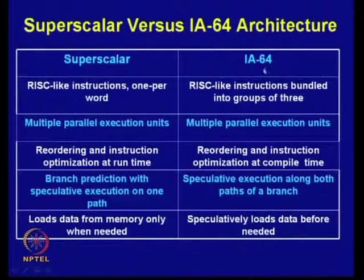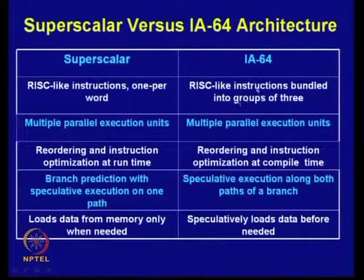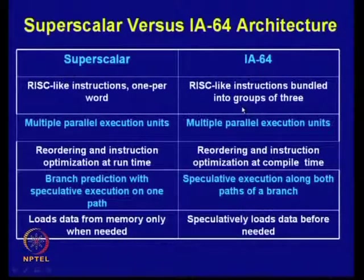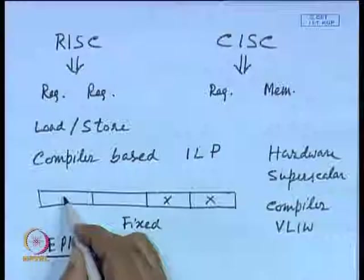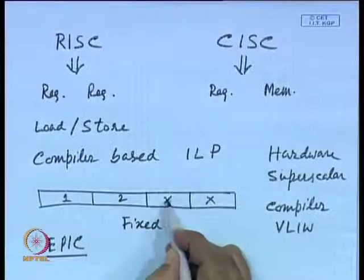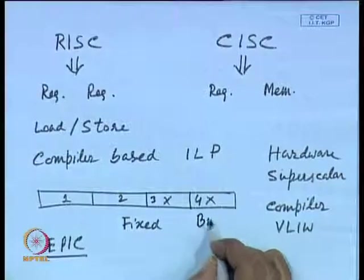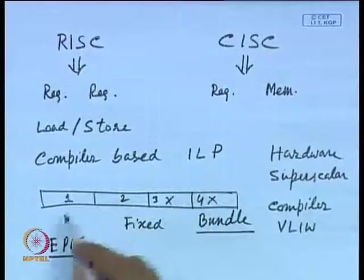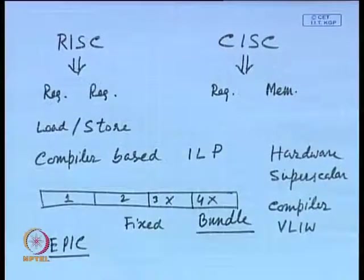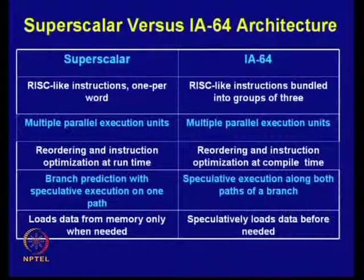In IA64, RISC-like instructions are bundled into groups of three. We have seen in VLIW architecture that in a single instruction you can bundle more than one instruction. In IA64, three instructions are bundled together to form a single instruction bundle. Multiple parallel execution units are also used in IA64.